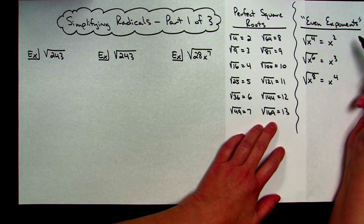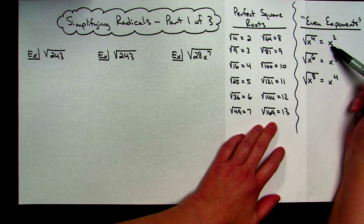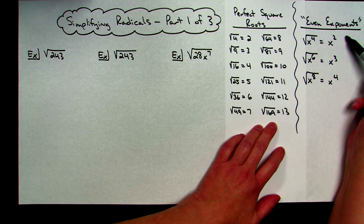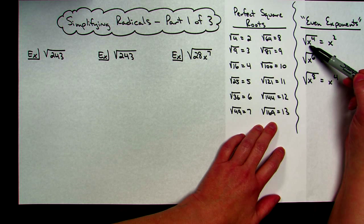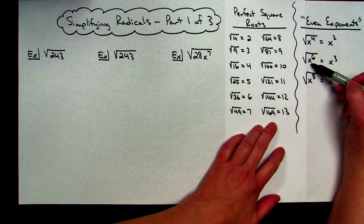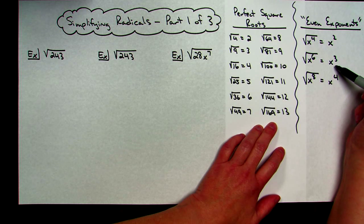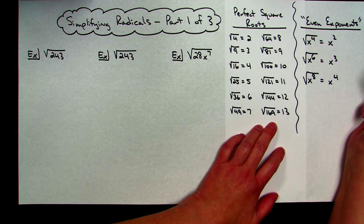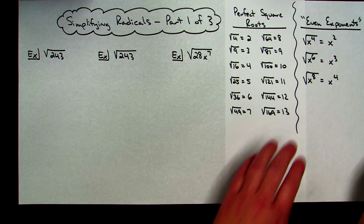And that's due to laws of exponents, because I could take x to the second times x to the second, and when multiplying like bases, I add the exponents, that would get me back to that x to the fourth. So square root of x to the sixth then would be x to the third, half of that exponent, square root of x to the eighth would be x to the fourth. So even exponents on our variables are going to be very helpful.